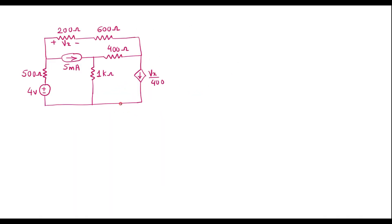This is the given circuit. In loop analysis or mesh analysis, the first step is to mark all loop currents. Here we have 3 loops and 3 sources. The 4 volt and 5 milliamp are independent sources. Here we have a dependent source: Vx by 400, which is a voltage-dependent current source — it is dependent on voltage Vx, where Vx is the voltage across the 200 ohm resistor.